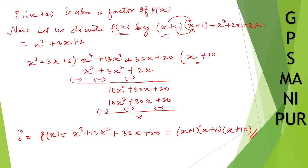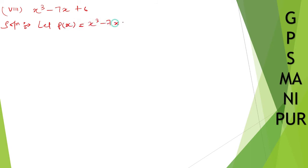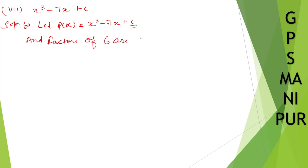Now let us do the next question. The next question is problem number 8. We have x cubed minus 7x plus 6. Solution. Let p of x is equal to x cubed minus 7x plus 6. And factors of the constant 6 are plus minus 1, plus minus 2, plus minus 3, and plus minus 6.